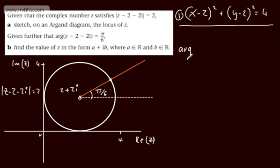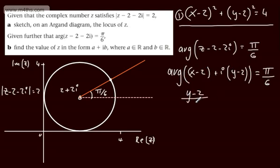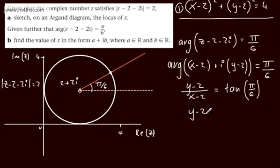We'll focus now on: arg of z minus 2 minus 2i is equal to pi by 6. I'm going to rewrite this and remove the argument. Using the x and y notation, we can write arg of x minus 2 plus i times y minus 2, equal to pi by 6. Removing the argument and rewriting, we get y minus 2 over x minus 2 is equal to tan of pi by 6. If we've got this angle of pi by 6, we can simply find the gradient by taking the tan of pi by 6, which gives us 1 over root 3.